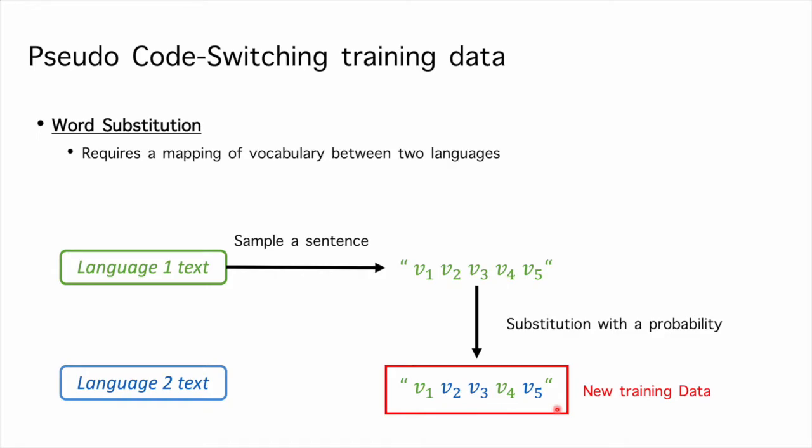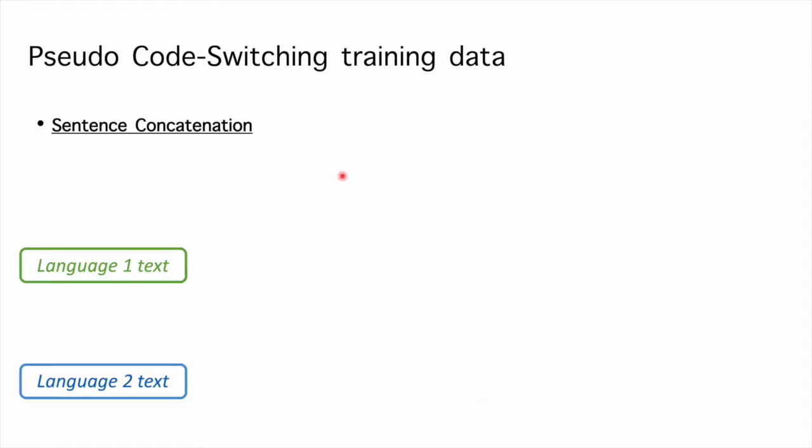However, this method needs an additional mapping dictionary between two languages. So here we introduce the other method to synthesize pseudo code-switching data. Without having an additional dictionary, we could apply sentence concatenation to achieve the goal.